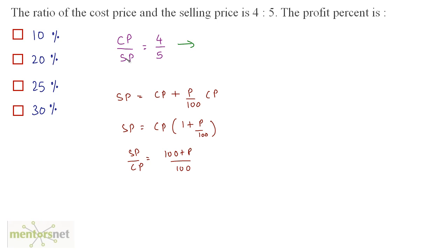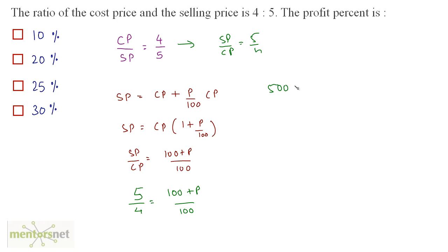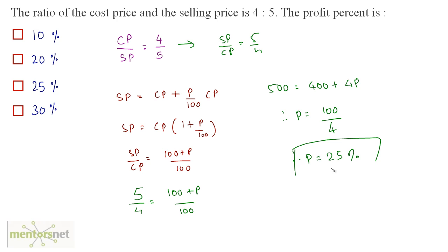From the given ratio CP/SP equals 4/5, so SP/CP equals 5/4. Therefore 5/4 equals (100 plus P)/100. Cross-multiplying gives 500 equals 400 plus 4P, so 4P equals 100, and therefore P equals 25%. The profit percentage is 25%, which is option C.